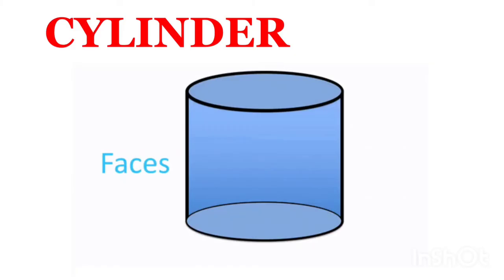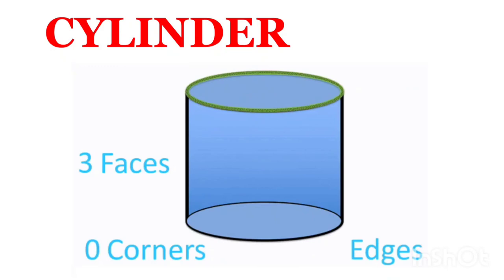Cylinder. In a cylinder, there are three faces: one curved face and two flat faces. There are zero corners. In a cylinder, there are two edges at the top and bottom.